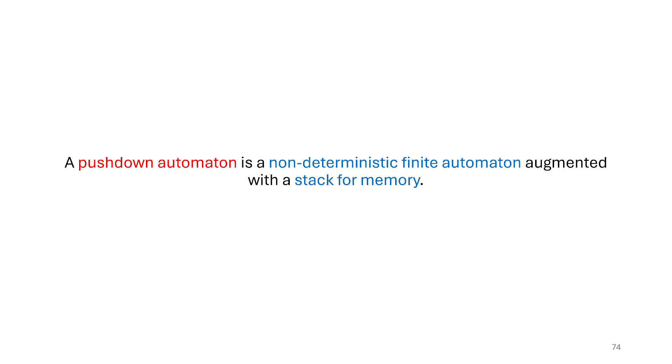So pushdown automaton is another type of finite automata, state machine like we've been working with already. Specifically we consider it to be a non-deterministic finite automata, but it's been augmented with memory.